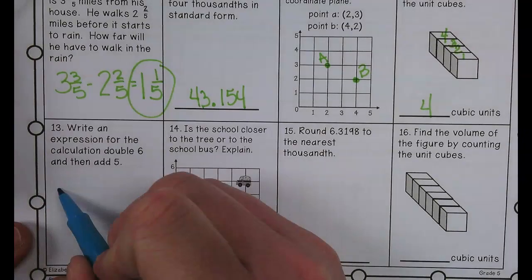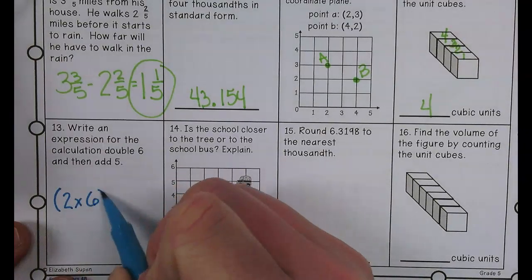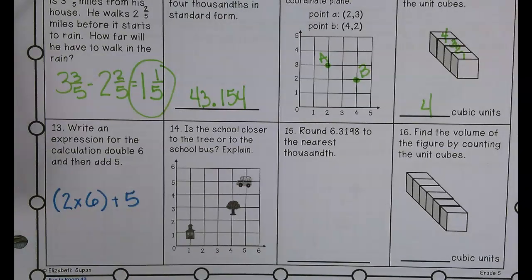Yep, so 2 times 6 plus 5, and 2 times 6 is in parentheses. Nicely done.